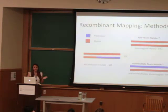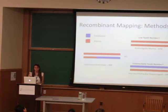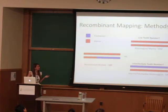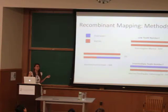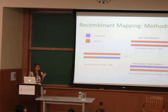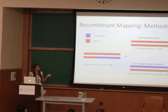The goal of recombinant mapping is to narrow down that region. By comparing the tooth numbers of animals with recombinant chromosomes to tooth numbers of their non-recombinant siblings, we can effectively narrow down this region.